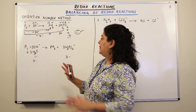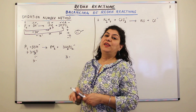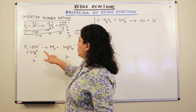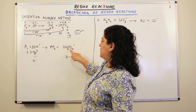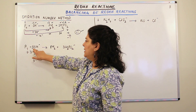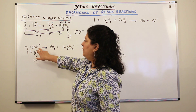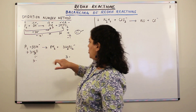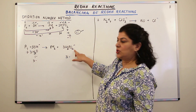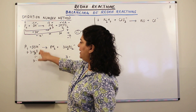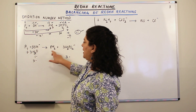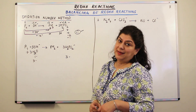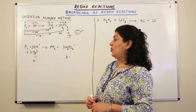In the last step, we verify that the number of atoms of each element on both sides is equal. There are four phosphorus on the left — one plus three is four phosphorus on the right. Oxygens: three from OH plus three from water gives six; three times two from H2PO2 is six. Hydrogens: nine on each side — three plus six on the left, three plus six on the right. Everything is balanced, so the equation is balanced.